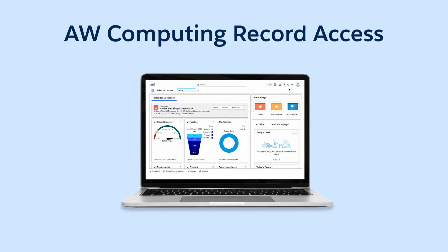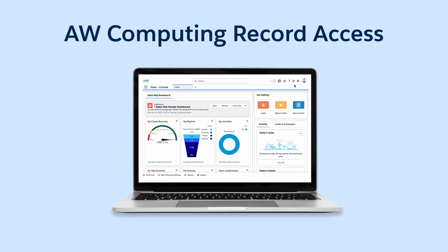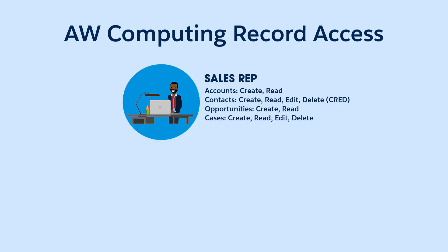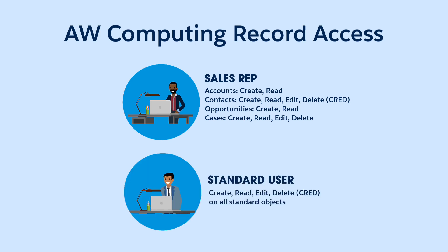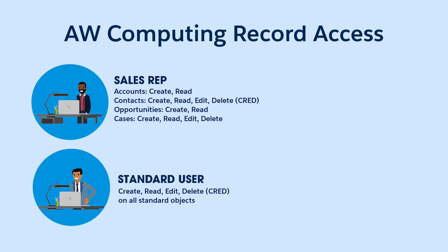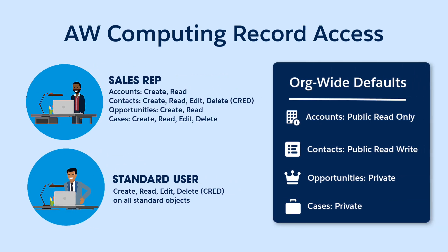Before we get into the role hierarchy, let's review the current setup at AW Computing. We configured object permissions for all of our inside sales reps via a permission set group. Everyone else was assigned full CRUD access to all standard objects. And we set our org-wide defaults, which determine the access users have to records they don't own.